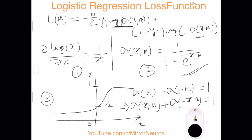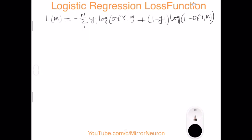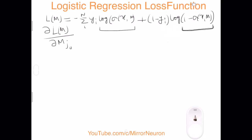To solve the derivative, we are taking d/dm of the loss function L(m), where m is the vector of all model parameters. We will first solve it for one particular model parameter, represented by m_{j0}. You can have more parameters like m_{j0}, m_{j1}, m_{j2}, and so on — the count increases with more features. We'll take the derivative with respect to one parameter first, then generalize. We have two log terms: the first term and the second term.